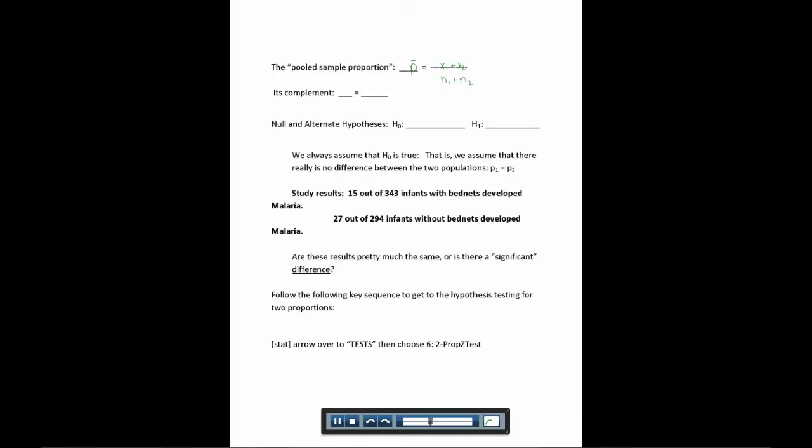So the complement would be Q-bar, and that would just be 1 minus P-bar. Just some symbols you might see if you're looking in the book or somewhere else.